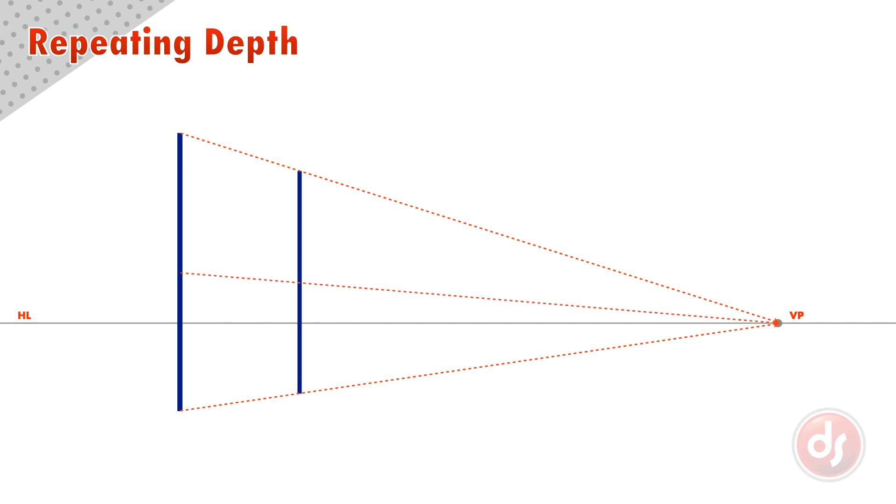Now draw a line from the top of the first pole through the center of the second pole, and end at the bottom of the perspective line. Where the line you've drawn meets your bottom perspective line would be the position of the third pole, repeating the original depth with the correct amount of convergence.